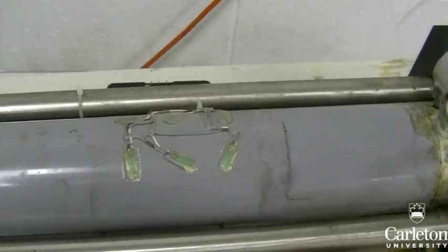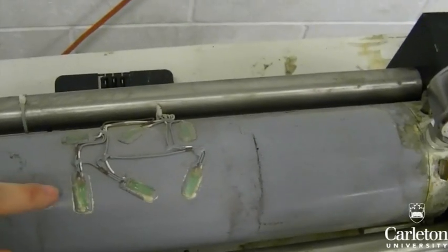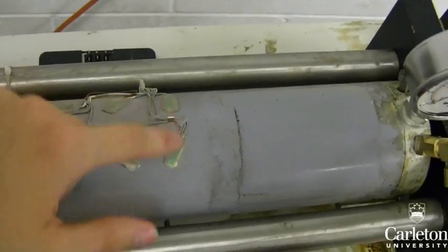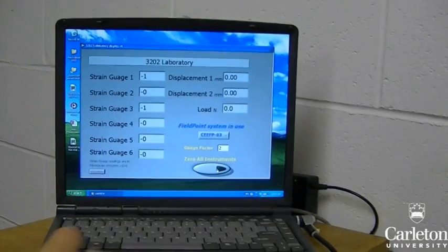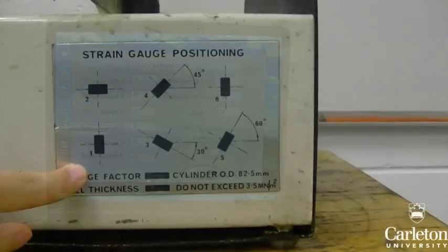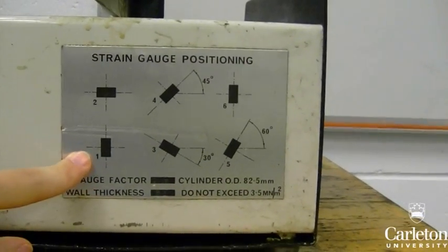In the middle of the cylinder, there are six strain gauges oriented at different angles. These six gauges are all connected to the recording software here. The guide on the side will tell you the angle for each gauge.